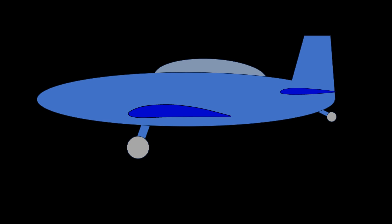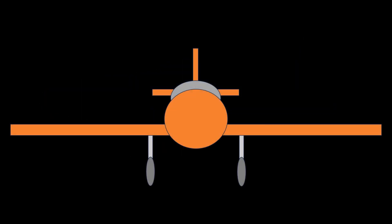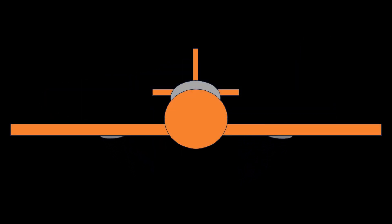Did you know that the landing gear is the second largest contributor to drag for most aircraft after the wing? And that this drag can be cut in half by just putting little fairings? This is why aircraft designers go to the trouble of designing retractable landing gears.